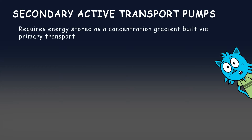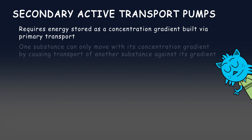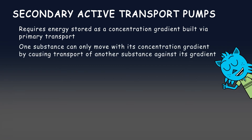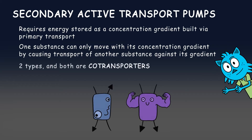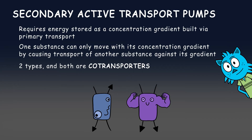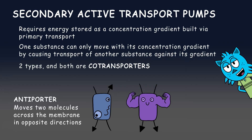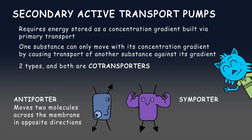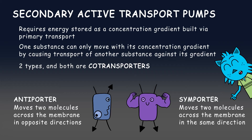Secondary transport requires energy stored as a concentration gradient built via primary transport. One substance can only move with its concentration gradient by causing transport of another substance against its gradient. There are two types of secondary transport pumps, and both are co-transporters, meaning they couple the favorable movement of one substance with its concentration gradient and the unfavorable movement of another substance against its concentration gradient. The antiporter moves two molecules across the membrane in opposite directions, while the symporter moves two molecules across the membrane in the same direction.